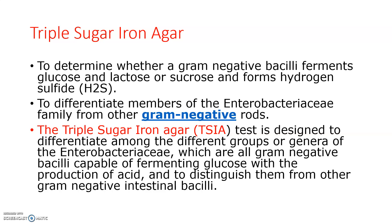Next is Triple Sugar Iron agar, also known as TSI agar. It is used to determine whether gram-negative bacilli ferment glucose, lactose, or sucrose and whether they form hydrogen sulfide. This medium is mainly useful to differentiate Enterobacteriaceae species from other gram-negative rods. The TSI test is designed to differentiate among the different groups or genera of the Enterobacteriaceae.